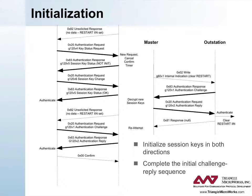This diagram shows how a master would typically initialize secure communications with an outstation. The outstation generates an unsolicited response to notify the master that it has restarted according to the normal rules of DNP3 unsolicited responses. Rather than confirm the unsolicited response, the master first initializes the session keys. By the rules of unsolicited responses, the outstation is required to abandon the original unsolicited response in favor of the session key transaction. When the outstation reattempts the restart unsolicited response, the master challenges and authenticates it before supplying a confirmation. The outstation does not require authentication of the master's confirm. However, the outstation does challenge the write operation to clear the restart IIN. Following this sequence, both sides are permitted to use aggressive mode because a complete challenge-reply sequence has taken place in both directions.